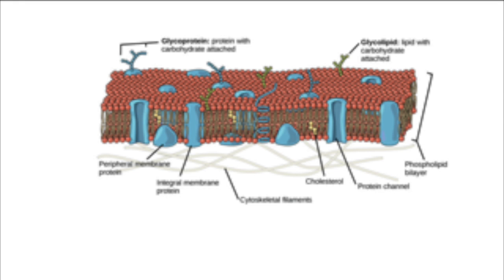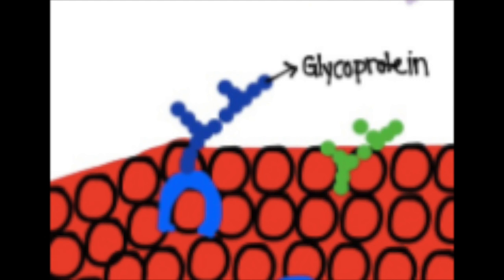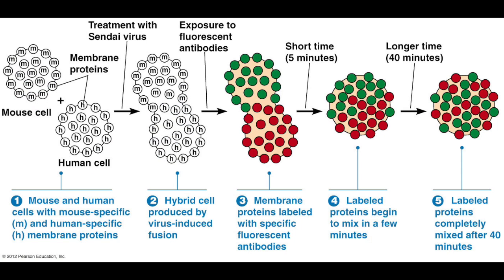The Davson-Danielli model was also disproved by fluorescent antibody tagging. This technique uses red and green markers attached to antibodies, such as glycoproteins, which then bind to membrane proteins. When cells fuse together, the markers mix within the membrane of the cell, showing that membrane proteins are mobile rather than fixed.